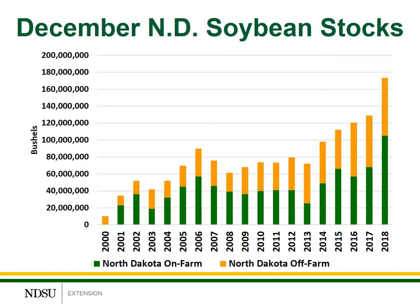This figure shows soybean stocks as of December 1st in North Dakota. Once again, the green bars represent on-farm stocks and the gold bars represent off-farm or commercial inventories. In 2018, we have record levels of not only on-farm and off-farm, but total stocks — again not surprising, as we had relatively good yields within the state and our export pace out of the state after harvest was relatively slow.